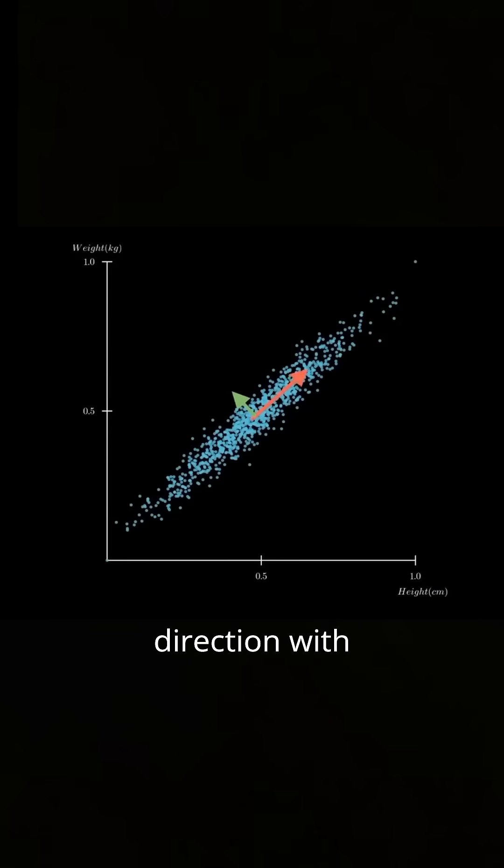The red arrow represents the direction with the most variation. This is the largest principal component.